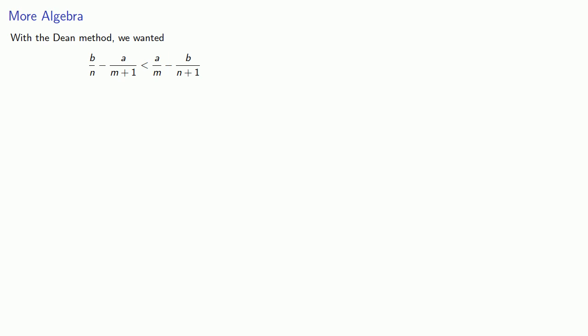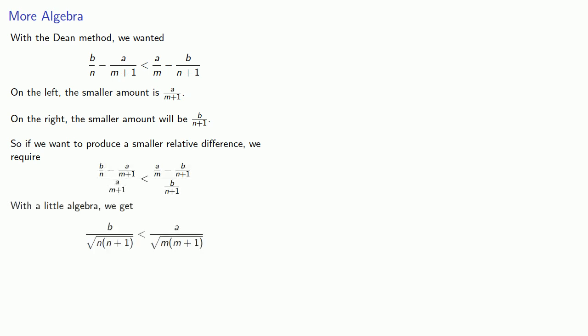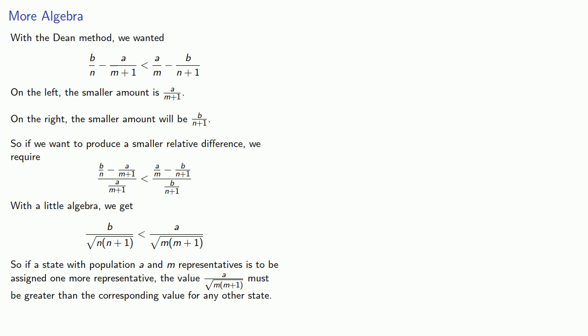Because of the way that we've set these up, we know the smaller quantity on both the left and right sides. If we want to produce a smaller relative difference, we require a certain condition. Going through the algebra, if a state with population A and M representatives is to be assigned one more representative, this value must be greater than the corresponding value for any other state. And these values are the Huntington-Hill priority values.